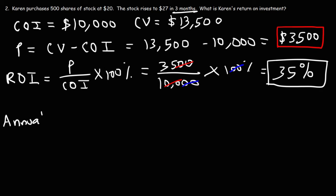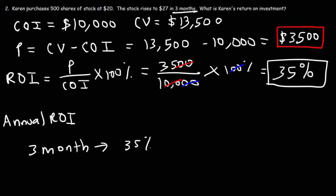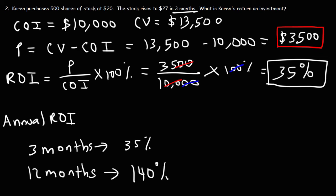So if you were to extrapolate this, what would be her annual ROI? If the stock continues to grow at its current pace and she earned a 35% return in three months, then in one year — which corresponds to 12 months — it should be four times that amount, assuming the same growth rate. So 35 times four would be an annual ROI of 140%.